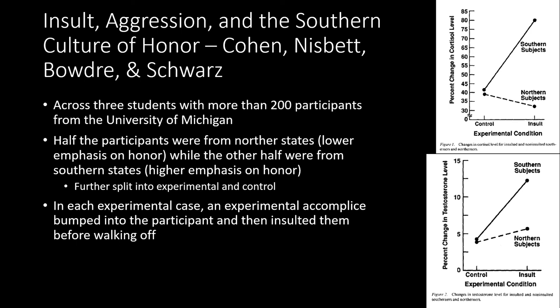Both halves were split into experimental and control groups. In the experimental groups, participants walking from one part of the experiment to another would be bumped into by an accomplice who was in on it. After bumping into them, the accomplice would insult them under their breath and then walk on. They wanted to examine what happened to these people following this insult.